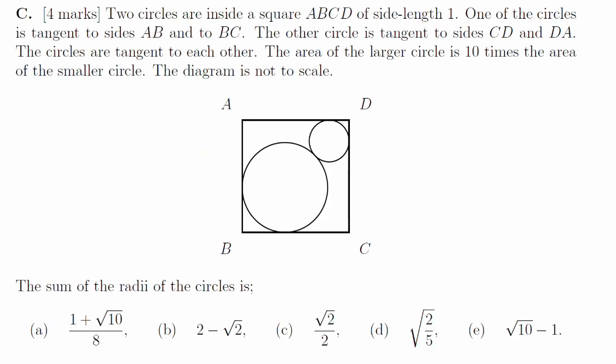1c. These circles are tangent to the outside of the square and to each other, so if we draw in some radii and do some trigonometry, we can work out that the sum of those radii is 2 minus root 2.